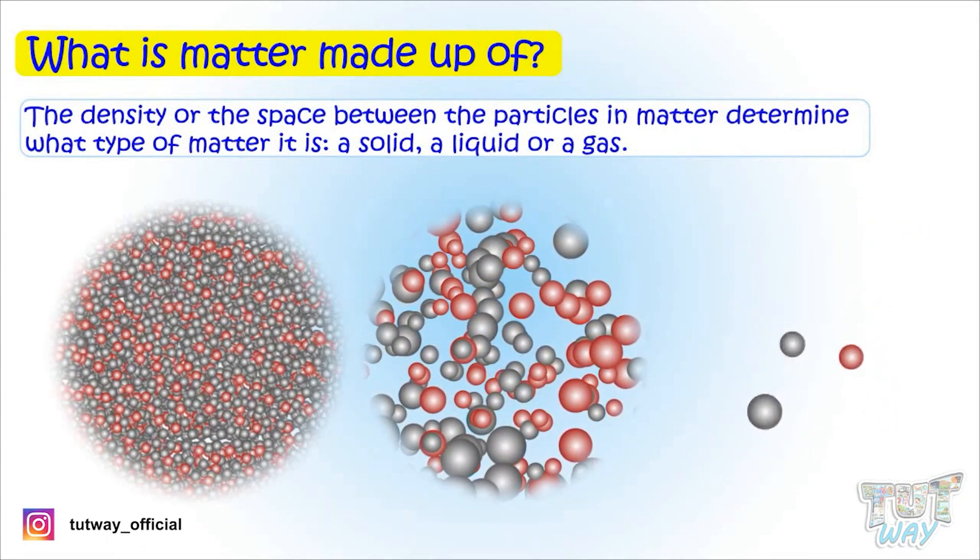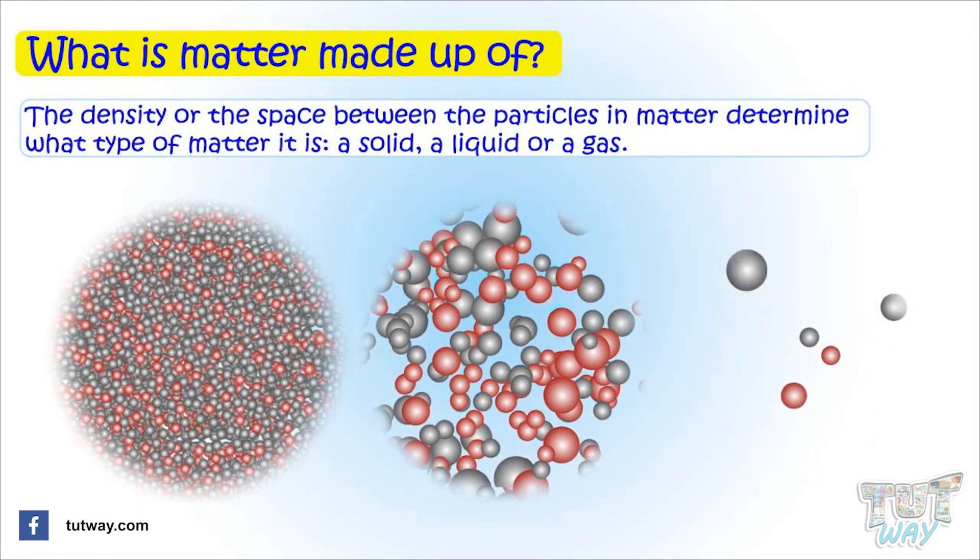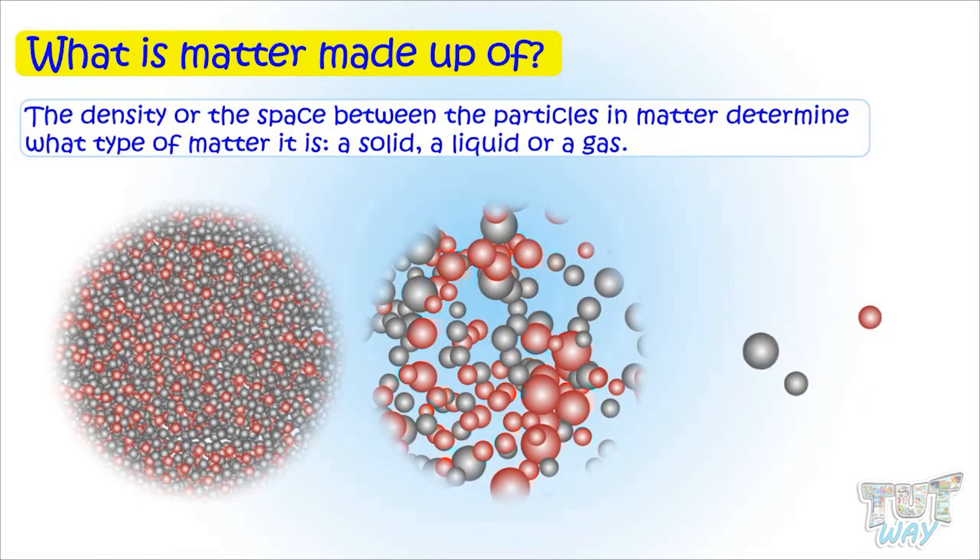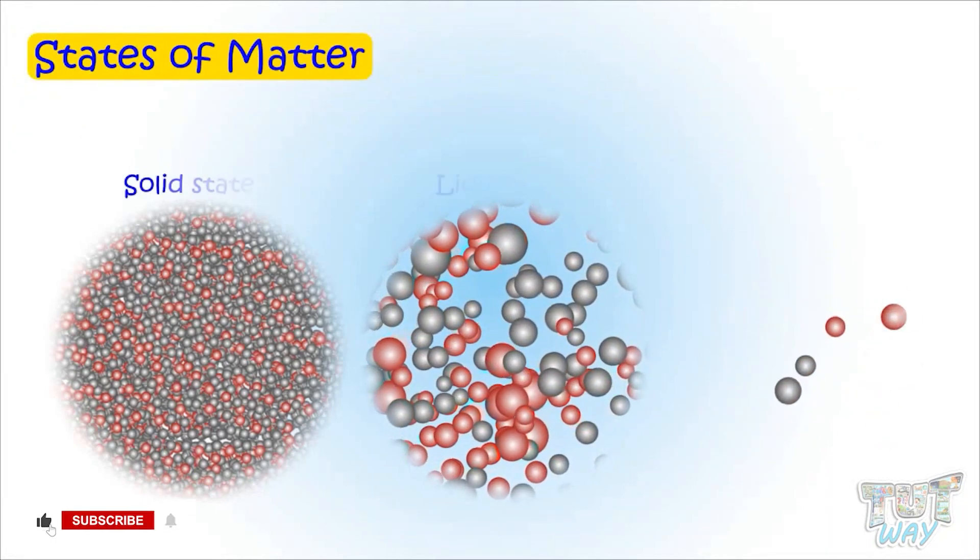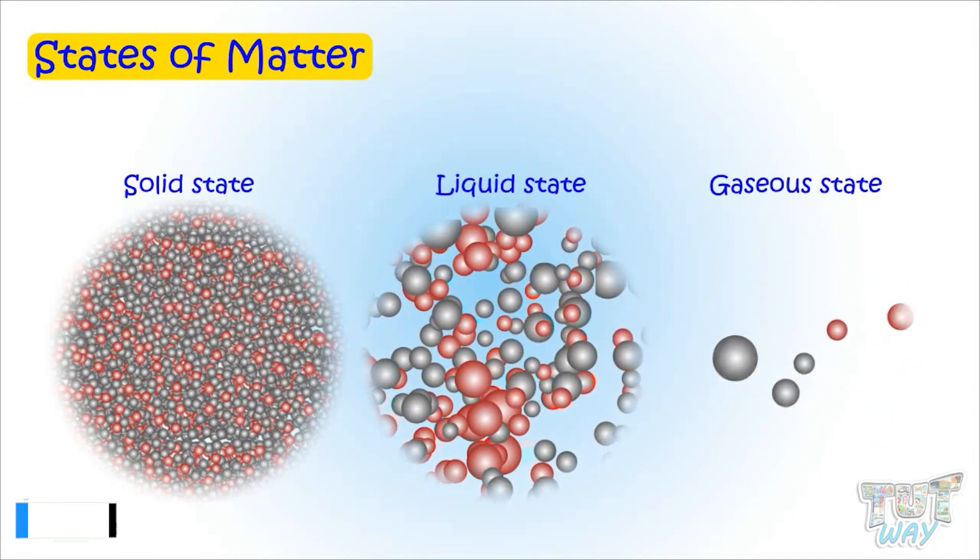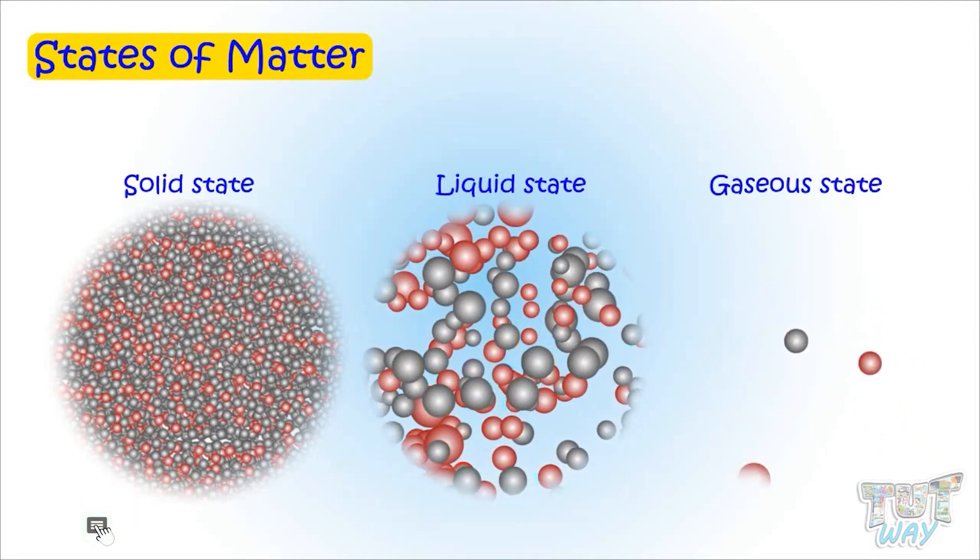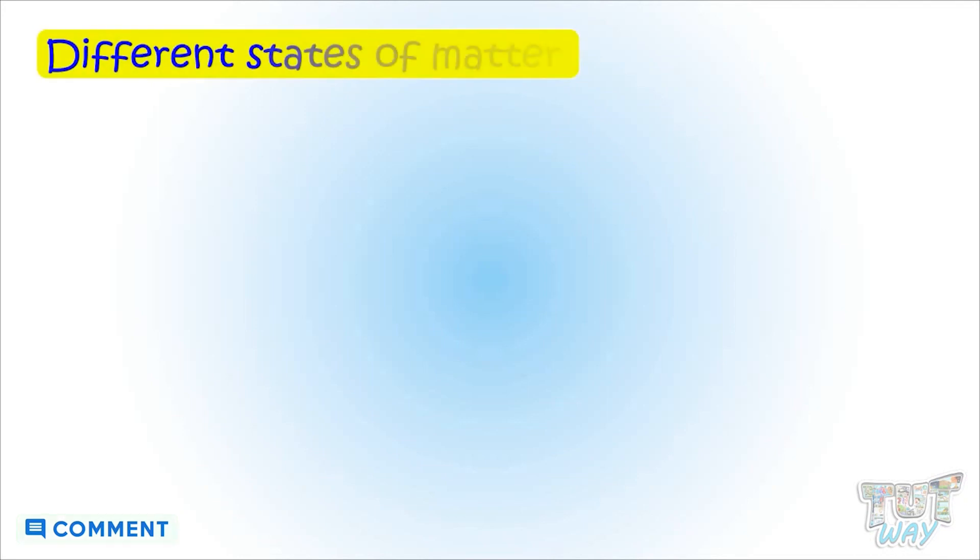A solid, a liquid, or a gas. So states of matter can be solid, liquid, or gaseous, depending on the density and the space between the particles of the matter. Now we will learn about the different states of matter: solid, liquid, and gas.